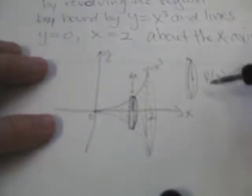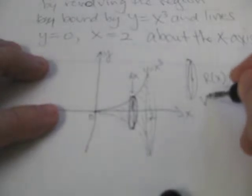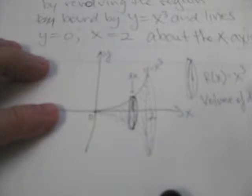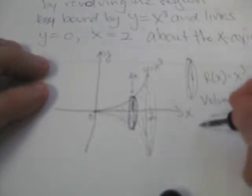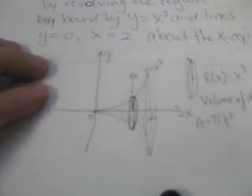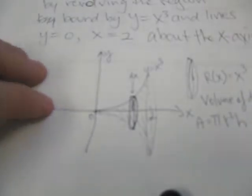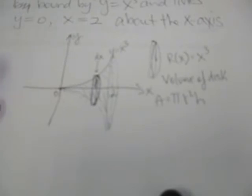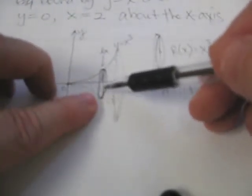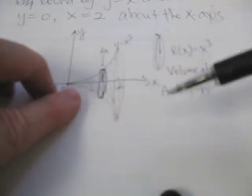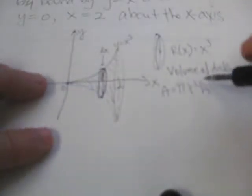Now, the volume of a disk is given by pi r squared, and then the thickness, which we sometimes use as h. Now, putting it in the context of this disk here, and what we're going to do is we're going to find the volumes of all these disks and add them up, and that's going to lead us to the integral.